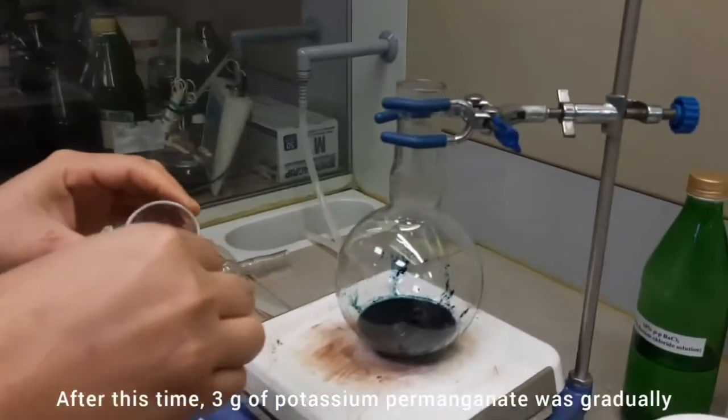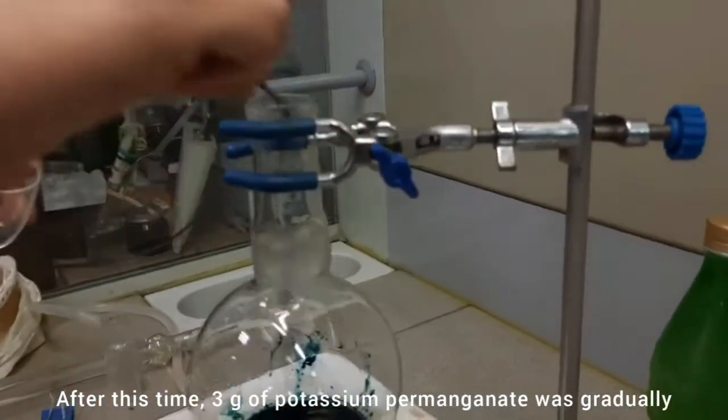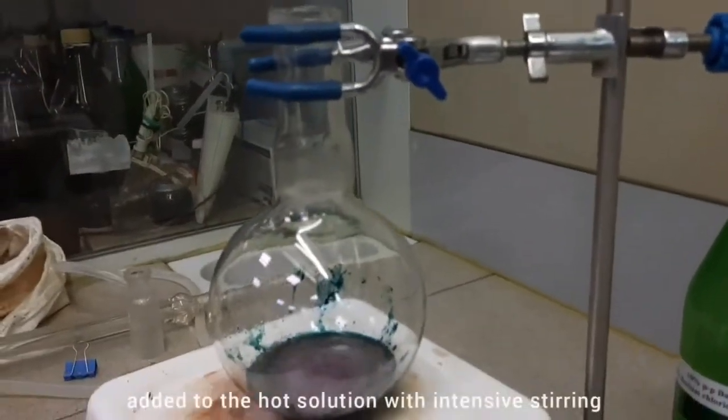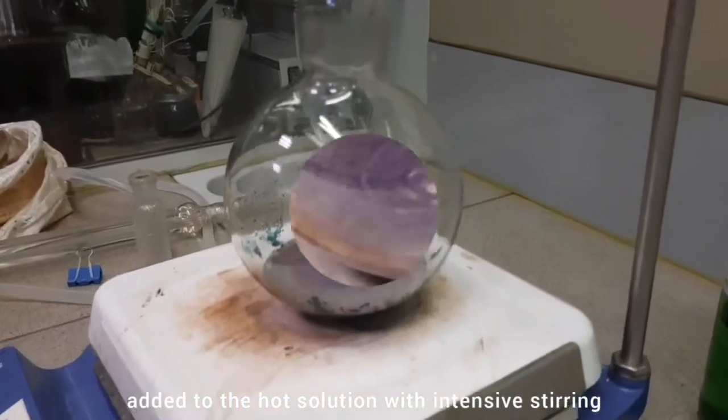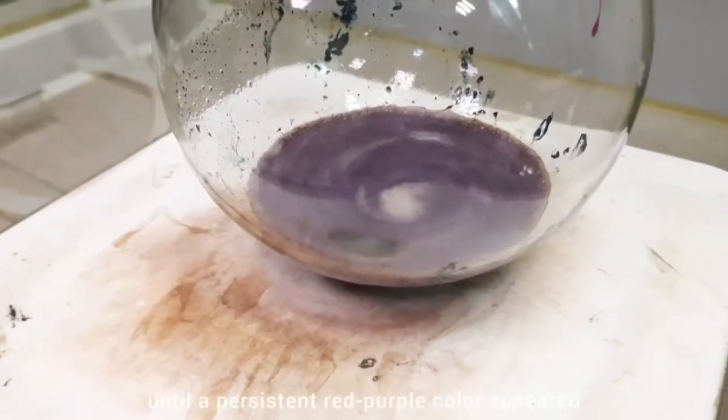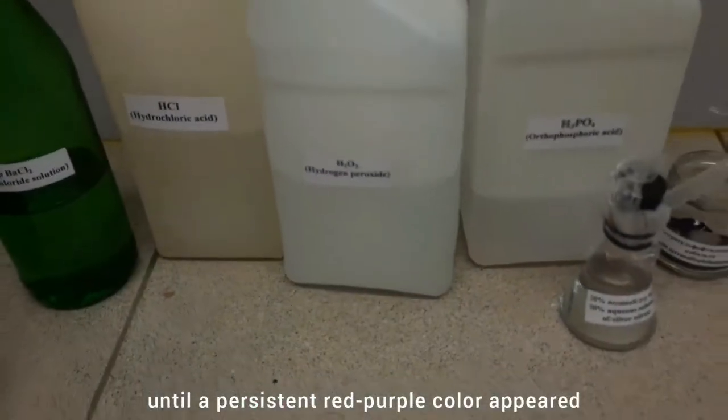After this time, 3 grams of potassium permanganate was gradually added to the hot solution with intensive stirring until a persistent red-purple color appeared.